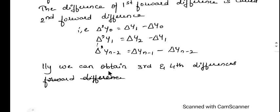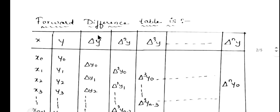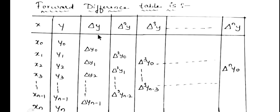The third forward difference is obtained by delta³ y0, the fourth by delta⁴ y0, and so on. Looking at the table: x and y will be given, then delta y, delta² y, delta³ y, and so on up to delta^n y. Only the power of delta is raising, not the y.